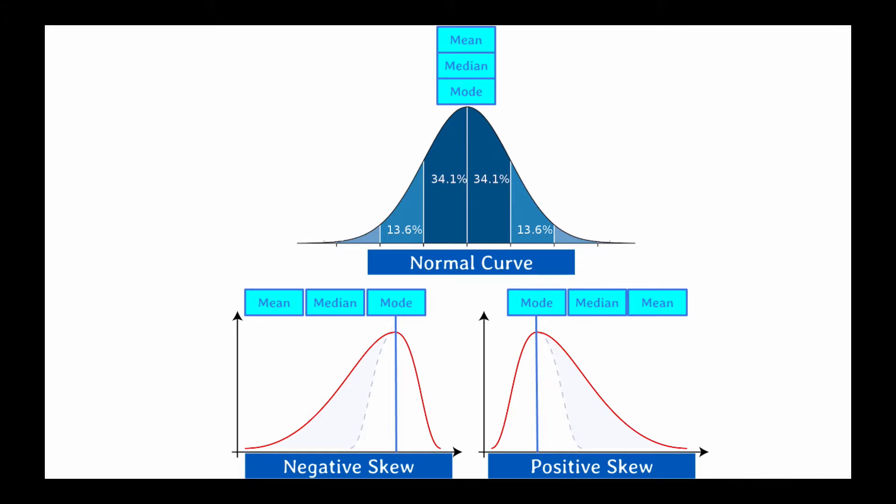For a negatively skewed unimodal distribution, the mean is less than the median, which is less than the mode. So remember, for skewness, mean is the value that gets dragged in the direction of the skew. For a positively skewed distribution, mean gets dragged to the right, and for a negatively skewed distribution, mean gets dragged to the left.